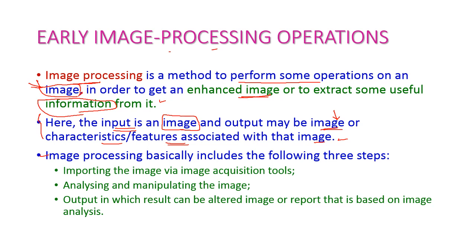Image processing includes three steps. First is importing the image via image acquisition tools — this is the input. Second is analyzing and manipulating the image. Third is the output, where the result can be an altered image or a report based on image analysis, that is, information about the image.